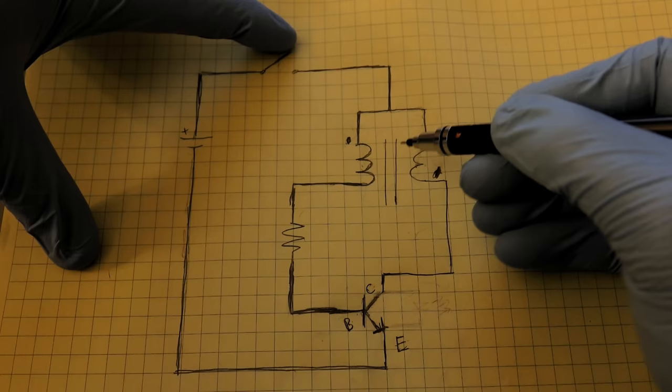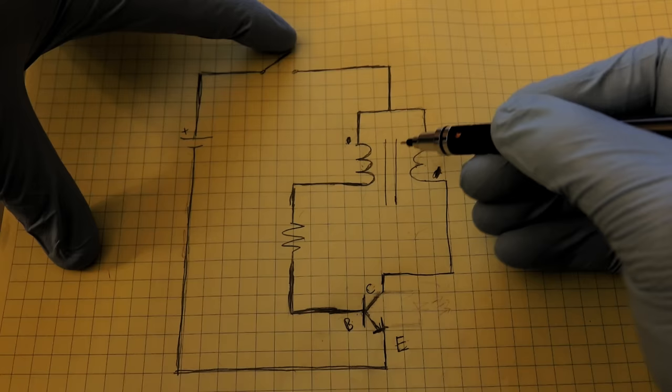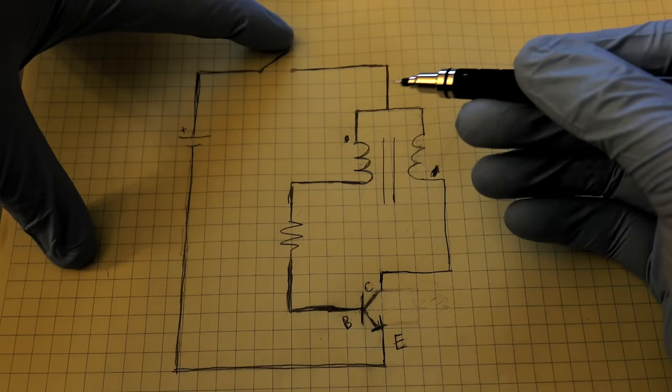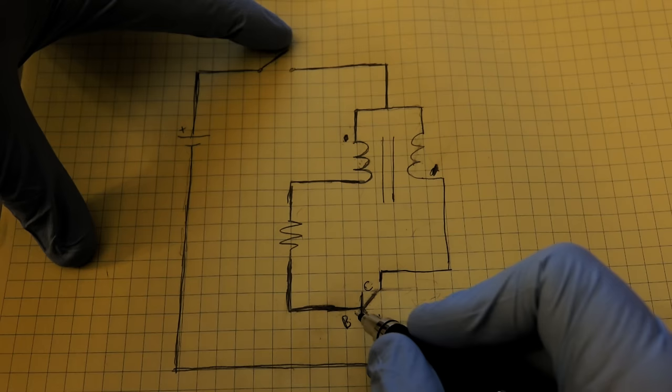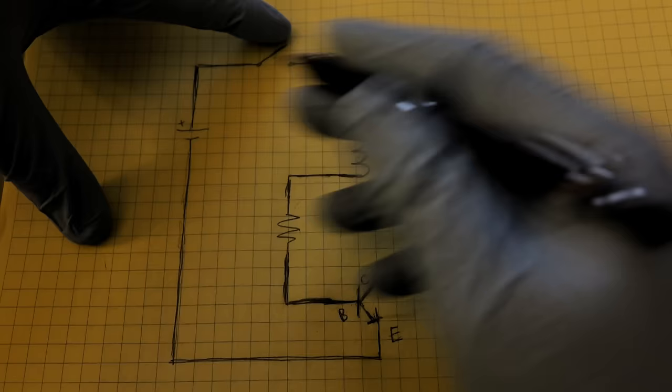And when this happens, this field is no longer changing. The magnetic field in this coil is no longer changing, so it collapses. And when it collapses, it collapses in the reverse direction. Therefore, it subtracts all that voltage it was adding to this coil from the coil, and thus from the base. So the base voltage drops below the transistor's turn-on voltage, and the whole circuit shuts off and starts again.